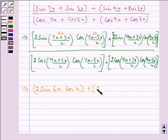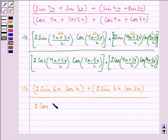6x plus 2 sin 6x because their sum is 12 and here their difference is 6. So, it will be cos 3x divided by 2 cos 6x cos x plus 2 cos 6x cos 3x.